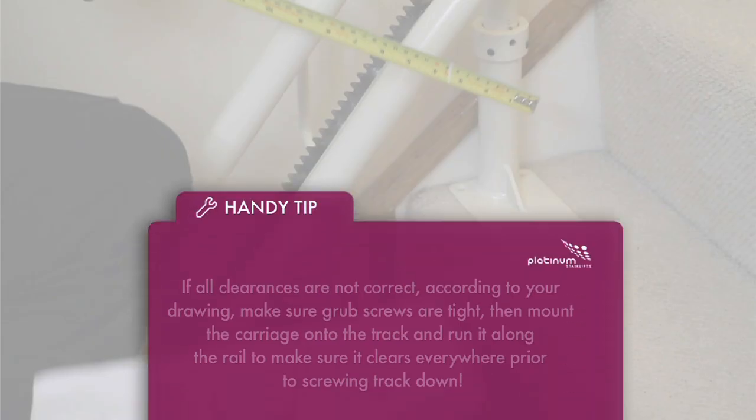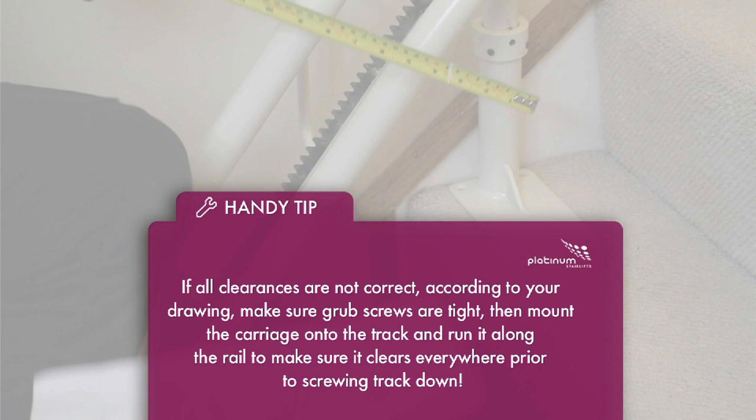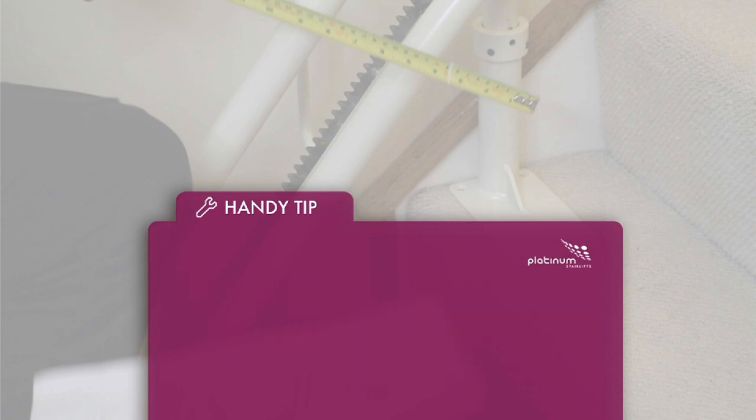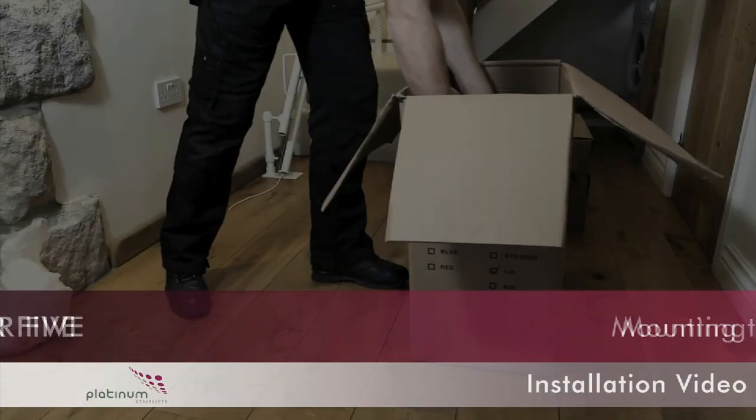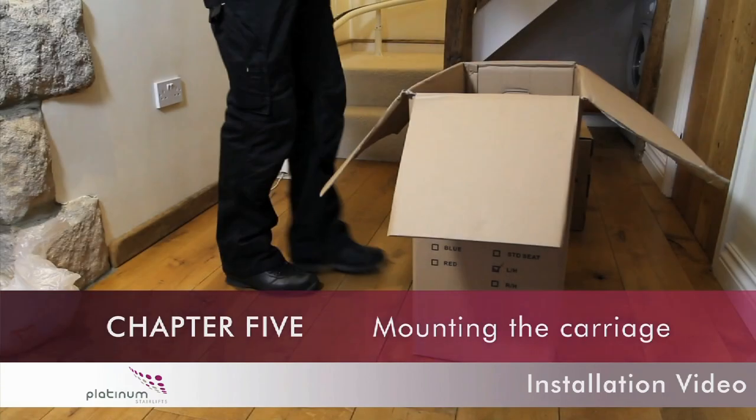Handy tip: If all the clearances are not correct according to your drawing, make sure the grub screws are tight, then mount the carriage onto the track and run it along the rail to make sure that it clears everywhere prior to screwing the track down.